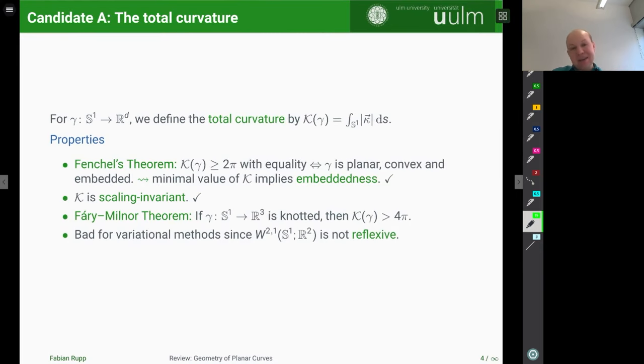However, there's one downside. Namely, if we want to work with variational methods, this is a bad energy in the sense that since we raise the curvature to the power 1 here, the natural energy space is given by W^{2,1} and this is not a reflexive space. So it's very inconvenient for variational methods, let's say.